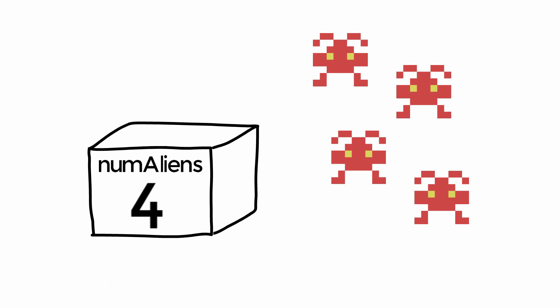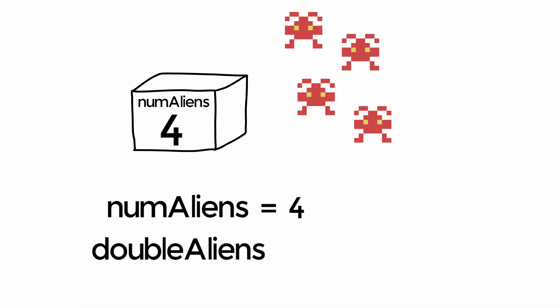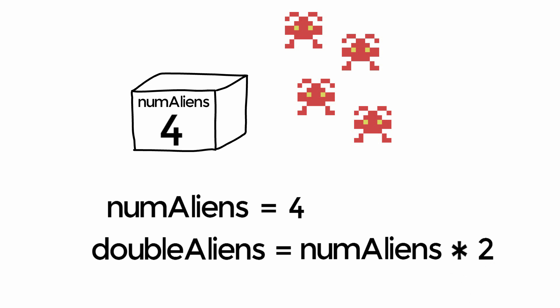A lot of the code that we write is involved with manipulating this data - storing information, retrieving that information, and altering that information. To put numbers into a variable we do something called assigning a value. This statement uses the assignment operator, or the equal sign, and the way we read this is that we are taking the variable numAliens and assigning the value 4 to it. We can then use this variable to do other calculations. So if we wanted a second variable to hold double the number of aliens, we name our variable and assign it a value based on numAliens. When our software sees us calling the numAliens variable it will look at what's inside that variable and use that number in our assignment.